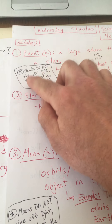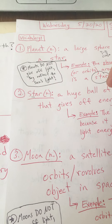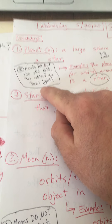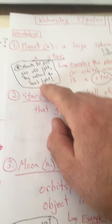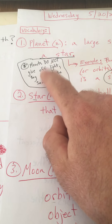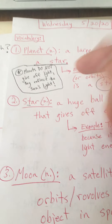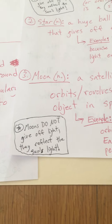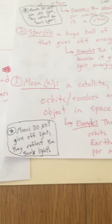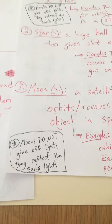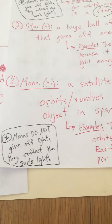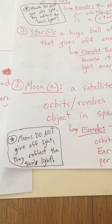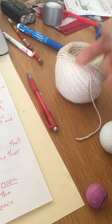One important piece of information: planets do not give off light — they reflect the sun's light. Sometimes at night you look up and you can see the planet Venus. It just looks like a bright star to us, but it doesn't have its own light. Same thing with moons: moons do not give off light. They reflect the sun's light. When we look up at the moon at night, what we see is the reflection of the sun's light shining on the moon.